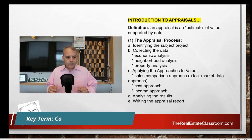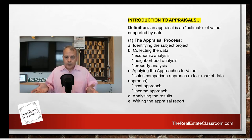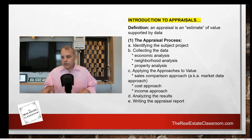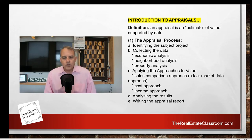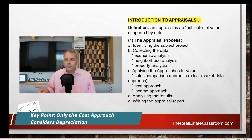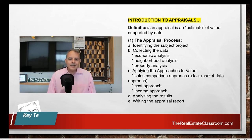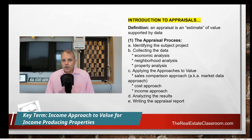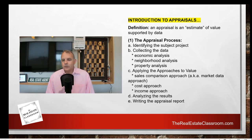The cost approach deals more with replacement value. If I'm an insurance company, I'm going to want a cost approach to insure a church, for example, where there really are no comparables. It's based on how much money it would cost the insurance company, if there's a total casualty, to rebuild this church in today's dollars minus depreciation. The cost approach is the only one of the three that takes depreciation into consideration. The income approach is used for income-producing properties like apartment communities and retail malls — income-producing properties use the income approach to value.